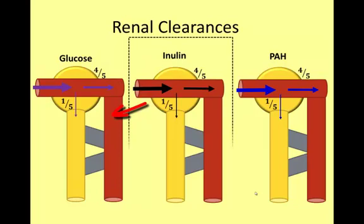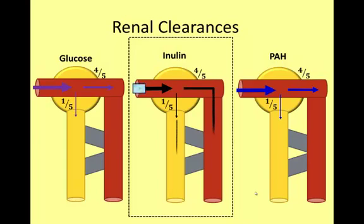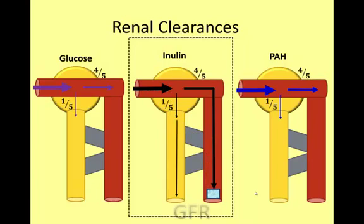Inulin is a 6,000 molecular weight polysaccharide used medically in renal function tests. Inulin is readily filtered at the glomerulus but is not secreted or reabsorbed. Thus, all of the filtered inulin remains in the tubule and is excreted in the urine, while the water filtered with it is reabsorbed into the peritubular capillaries. Consequently, the clearance of inulin can be used as a measure of the glomerular filtration rate (GFR).